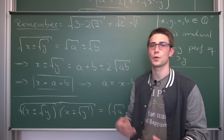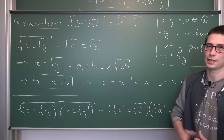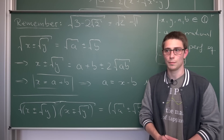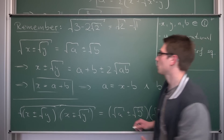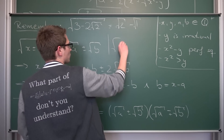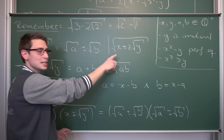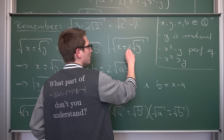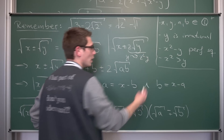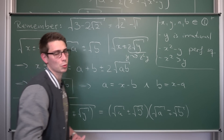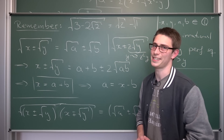Those are the conditions needed. You can now construct exercises to try denesting certain radicals — there are many cases where it doesn't work because one of the conditions is not fulfilled. If you want to denest expressions of the form square root of x plus or minus z times the square root of y, you can just drag the z into the square root, setting your y equal to z squared times y, and then you are done. This basically concludes today's video and maybe a few more videos to come on denesting the radical.